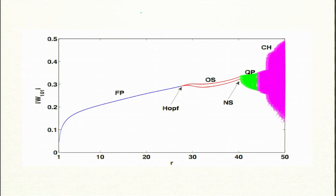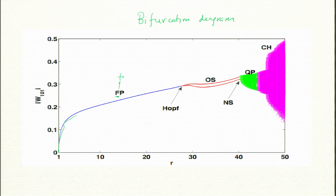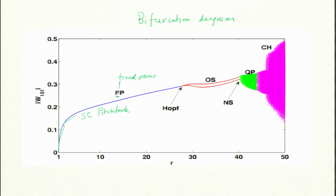This is called a bifurcation diagram. Small r is on the horizontal axis. It bifurcates into a pitchfork — FP means fixed point, and this is why it is a supercritical pitchfork bifurcation. In the simulation it goes all the way up to around r=25 or so; in the model it is around 20-odd.